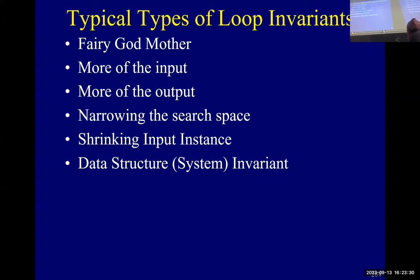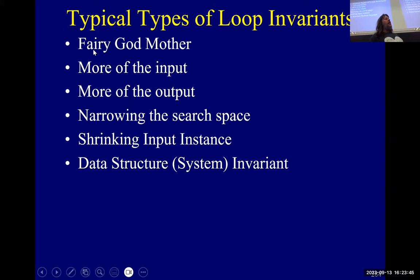So as I promised you, I've classified — and this is just my making stuff up, so you won't see this in an e-book — I've classified the types of loop invariants into: fairy godmother, more of the input, more of the output, narrowing the search base, shrinking the input, and I threw in system invariants. We'll just go through these and see examples of each.